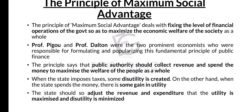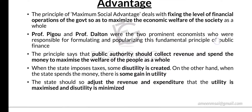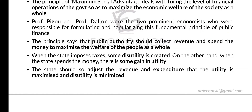On the other hand, when the state spends money there is some gain in utility. When the government increases public expenditure — for example by introducing new policies, increasing ration, or spending on infrastructure such as schools, buildings, bridges, and roads — it increases the utility of the public. So increasing revenue creates disutility and increasing expenditure creates utility.